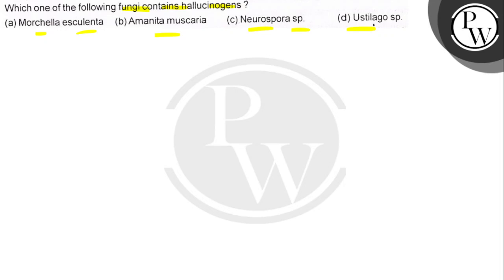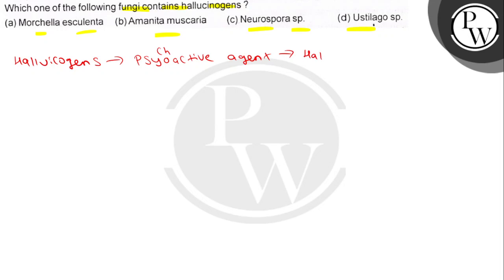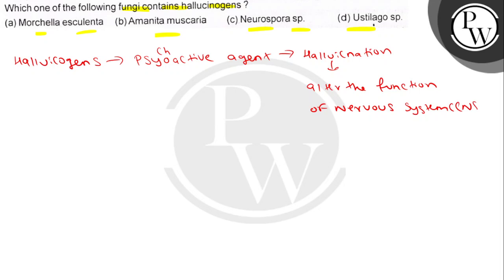So let's see — hallucinogen. Hallucinogen is also known as psychoactive agents. This is responsible for hallucination. It actually alters the function of the nervous system, especially your CNS, due to which there are changes in mood.